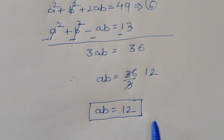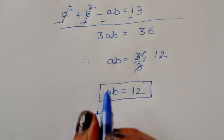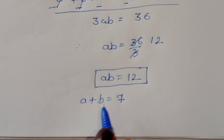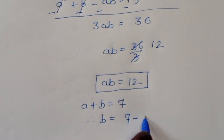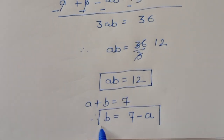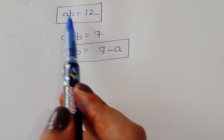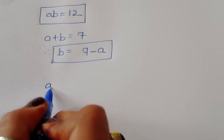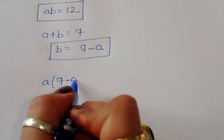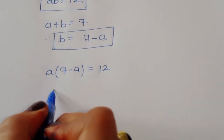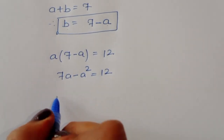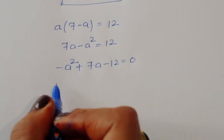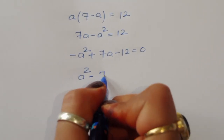We have ab = 12 and a + b = 7. So b = 7 − a. Substituting into ab = 12: a(7 − a) = 12, giving 7a − a² = 12. Rearranging: a² − 7a + 12 = 0.